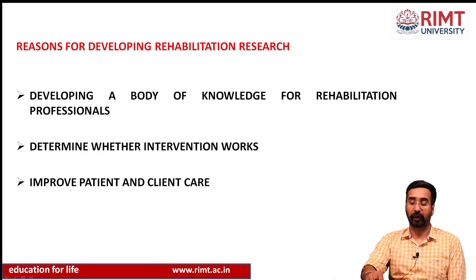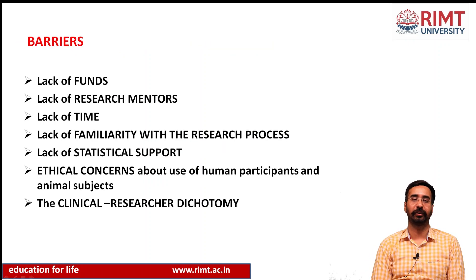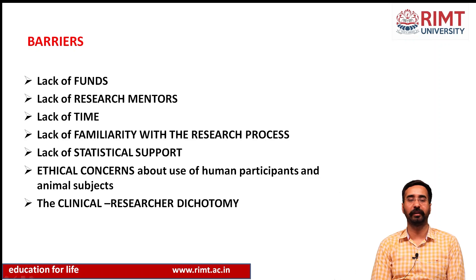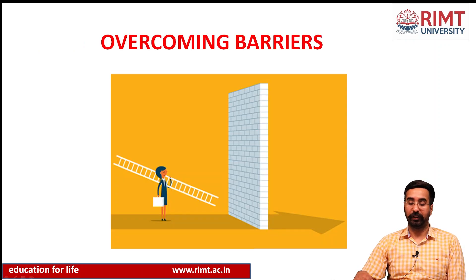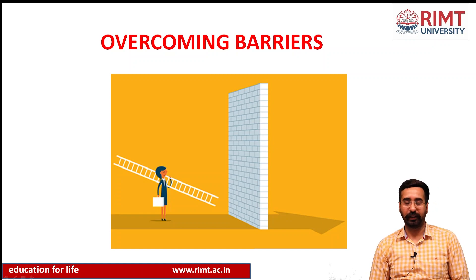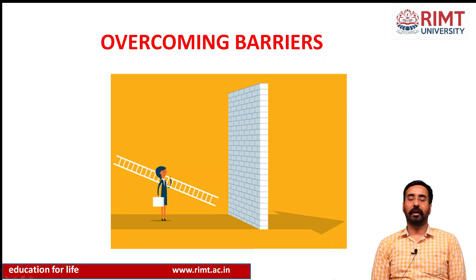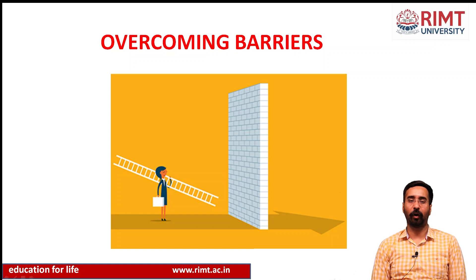We will conclude this lecture with a list of barriers. There may be hundreds of barriers once you start the research process, but I have introduced seven: lack of funds, lack of research mentors, lack of time, lack of familiarity with the research process, lack of statistical support, ethical concerns about use of human participants and animal subjects, and the clinical-researcher dichotomy. We will discuss these barriers in detail in the next lecture, along with how to overcome them. One thing is certain — you will encounter these barriers, but with commitment, time, and resources, you will be able to overcome them because nothing is impossible.